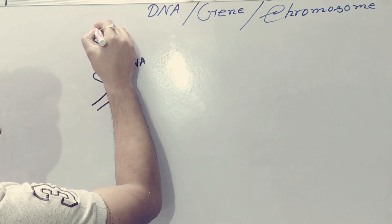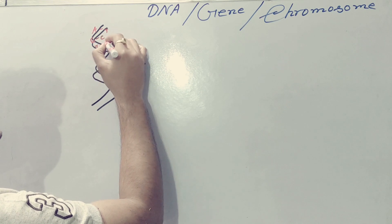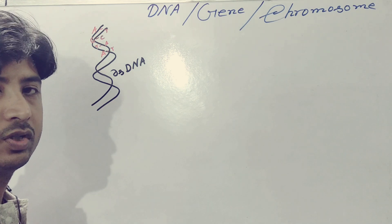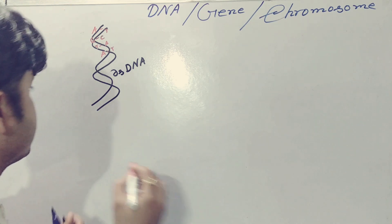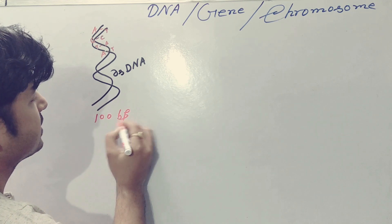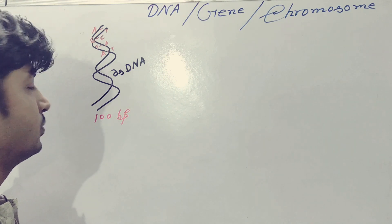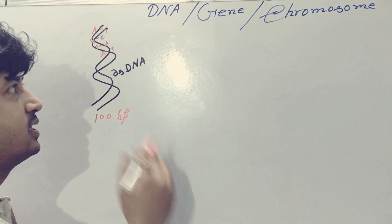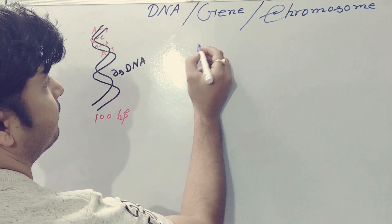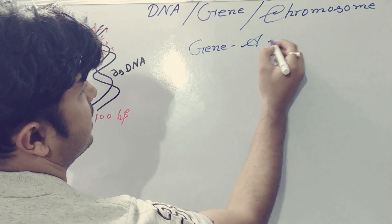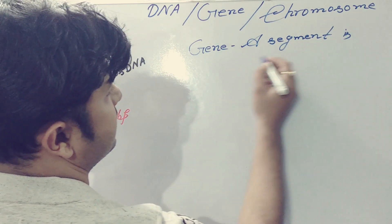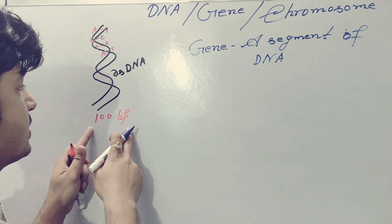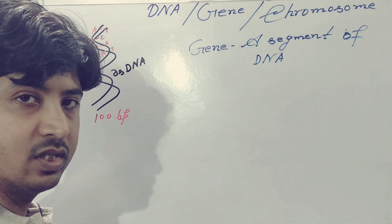The double-stranded DNA present in every cell of our body contains A, T, G, C, T, A, A, T — likewise the total backbone is formed with these four bases, with purine-pyrimidine pairing. So suppose this DNA consists of 100 base pairs — the length of this DNA is 100 BP. Now moving on to gene.